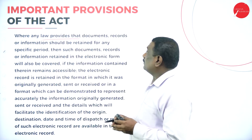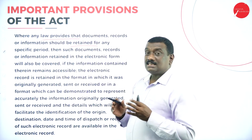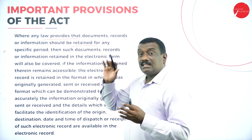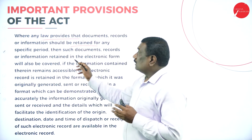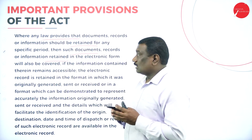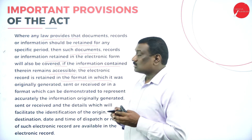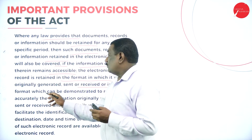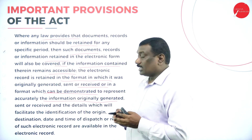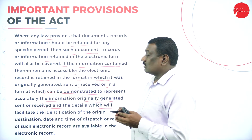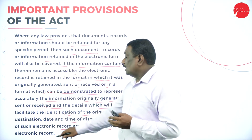Where any law provides that documents, records, or information should be retained for a specific period of time, such documents, records, or information retained in electronic form will be covered — if the information contained therein remains accessible, the electronic record is retained in the format in which it was originally generated, sent, or received, and the details facilitating identification of the origin, destination, date and time of dispatch or receipt of such electronic records are available.